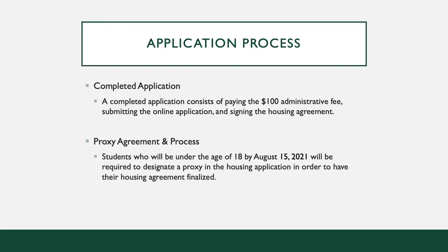First, we are going to talk about the application process for university housing. A completed application consists of paying the $100 administrative fee, submitting the online application, and signing the housing agreement.